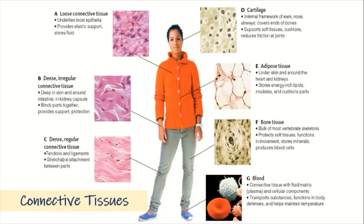Dense regular connective tissue is found in your tendons and ligaments and is stretchable to allow movement. We also have cartilage and bone. Cartilage lacks the calcium structures found in bone but provides the framework of the ears, nose, and airways, and covers the ends of bones. Cartilage supports soft tissues and acts as a cushion that reduces friction at joints.